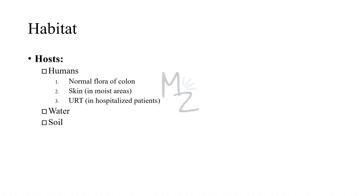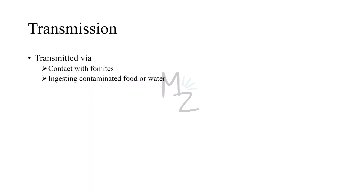Habitat and hosts: Pseudomonas aeruginosa is found chiefly in soil and water but is also found in humans. Approximately 10% of humans carry it as normal flora of the colon; it is also found on the skin in moist areas and can colonize the upper respiratory tract in hospitalized patients.